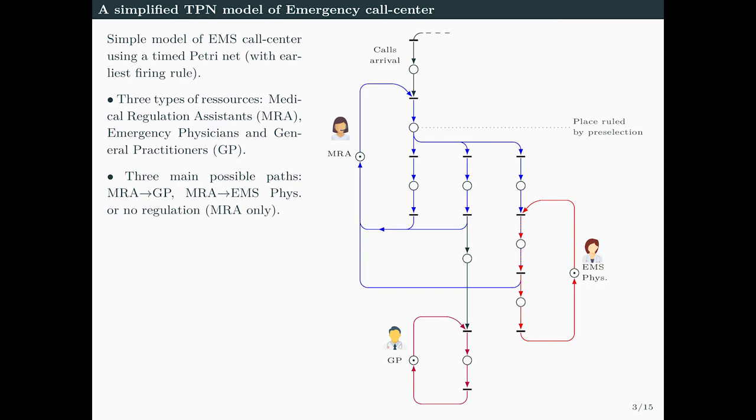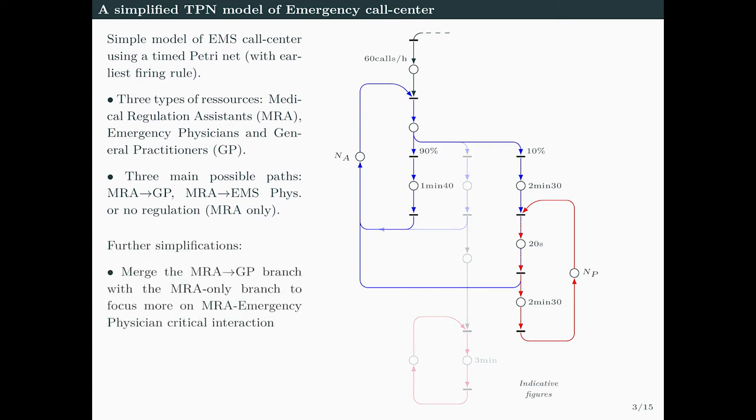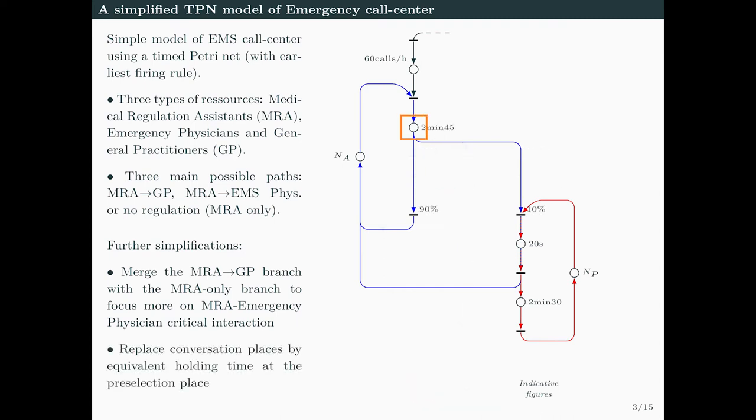Now that we have explained the Petri net's topology, we can specify its parameters: how many calls per hour arrive, how long conversations and consultations last, what is the proportion of patients in different paths, and so on. We will also simplify this Petri net because what we really want to focus on is the interaction between the MRA and the emergency physician, which is a critical link. For both the MRA path and the GP path, the MRA is released just after the conversation, so we can merge these branches with equivalent parameters without affecting the MRA behavior.